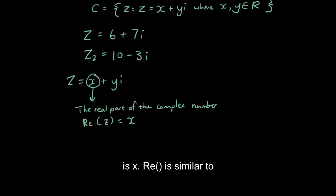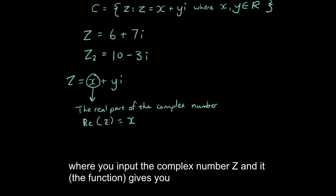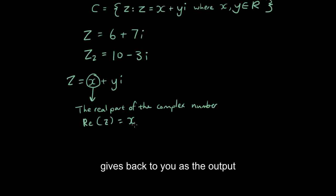So the real part of the complex number is x. Re is similar to a function where you input the complex number z and it gives back to you as the output the real part of the complex number z, which is x.